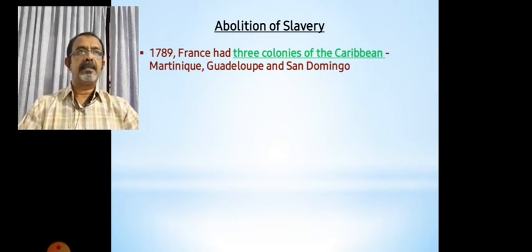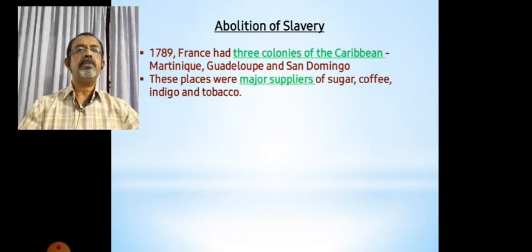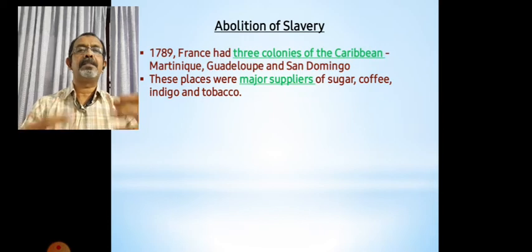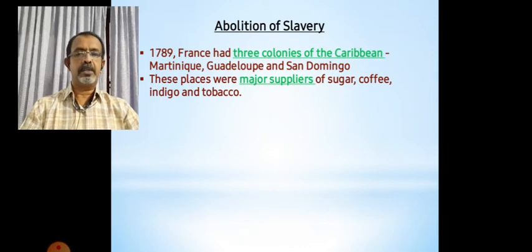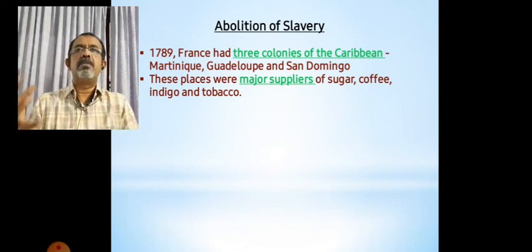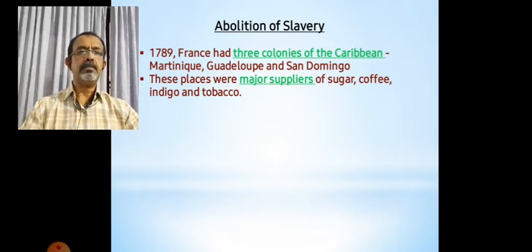These colonies, these small islands, were mainly used for plantations. They supplied France with sugar, coffee, indigo, tobacco, etc. Remember, when the industrial revolution happened and imperialism started, every country was looking for more resources to improve their economic situation. Colonization was mainly for getting more and more natural resources for the development of the country. So France gained sugar, coffee, indigo, and tobacco from these three major colonies in the Caribbean.